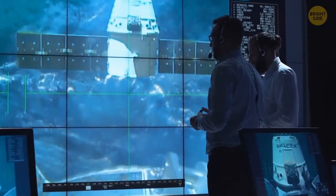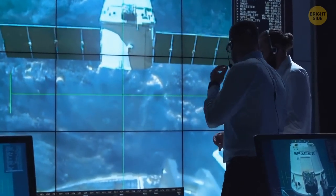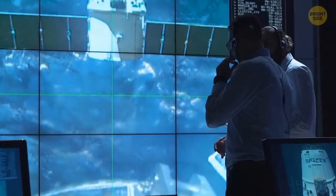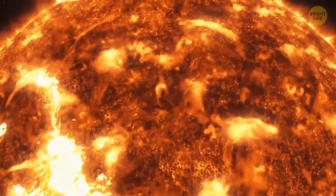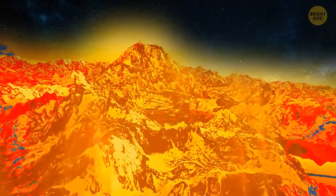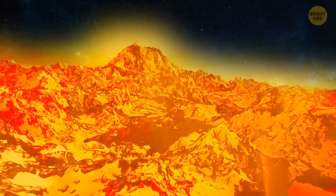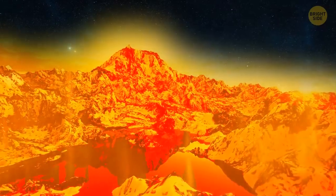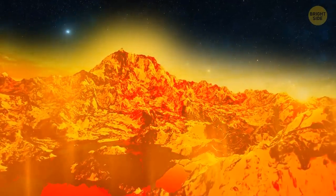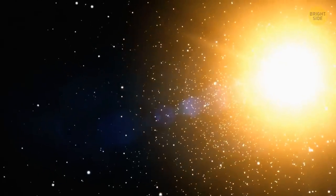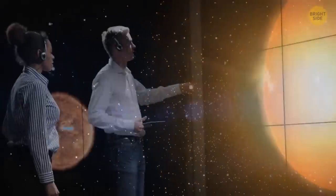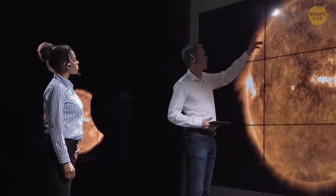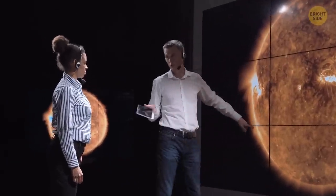The Parker Solar Probe surprised astronomers by providing more information about this boundary. It turns out, it's not a perfect circular wall like we used to think. The boundary is broken and uneven. It looks more like a mountain range. These bumpy regions have such a shape because of the uneven flow of plasma from the surface of the Sun. The larger and more powerful the flow, the farther the boundary is from the star's surface. But scientists don't know yet what exactly causes this difference.